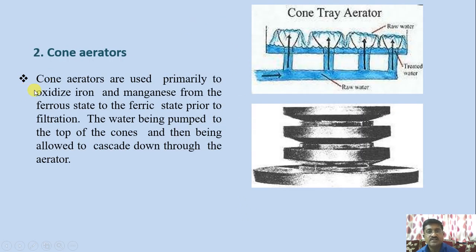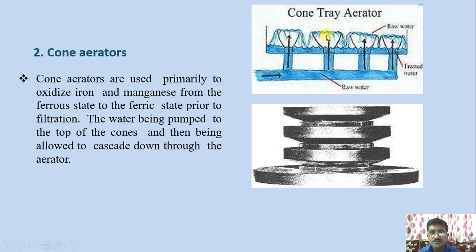Cone aerators are used primarily to oxidize iron and manganese from the ferrous stage to the ferric state prior to filtration. Water is pumped to the top of the cones and allowed to cascade down through the aerator. The cone trays are flooded and water moves through the cones, being introduced as splashed water.